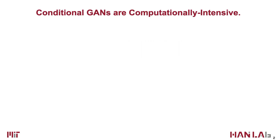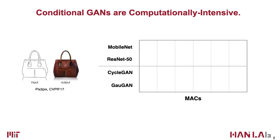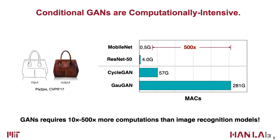Conditional GANs have enabled controllable image synthesis for many applications. However, they are very computationally intensive for mobile deployment. Compared to image recognition models, conditional GANs require two orders of magnitude more computation.